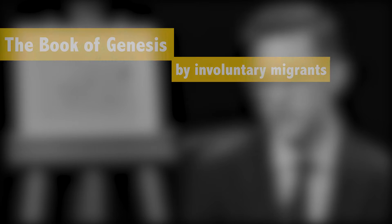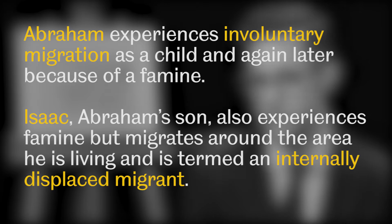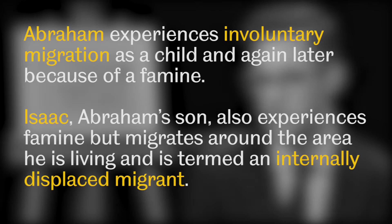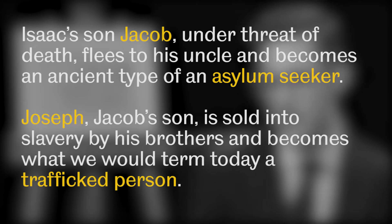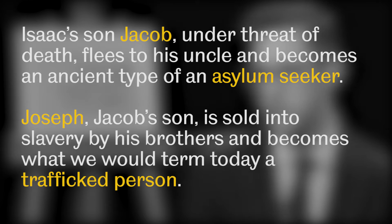Abraham experiences involuntary migration as a child and again later because of a famine. Isaac, Abraham's son, also experiences famine but migrates around the area he is living in and is termed an internally displaced migrant. Isaac's son Jacob, under threat of death, flees to his uncle and becomes an ancient type of an asylum seeker. Joseph, Jacob's son, is sold into slavery by his brothers and becomes what we would term today a trafficked person.